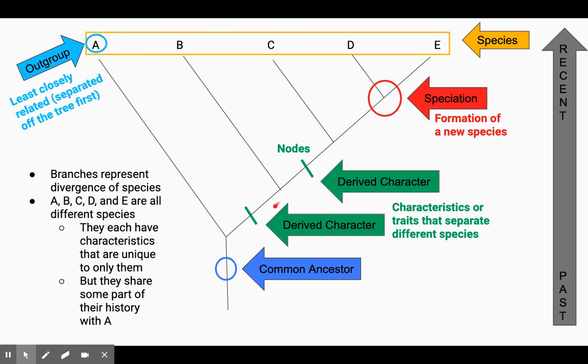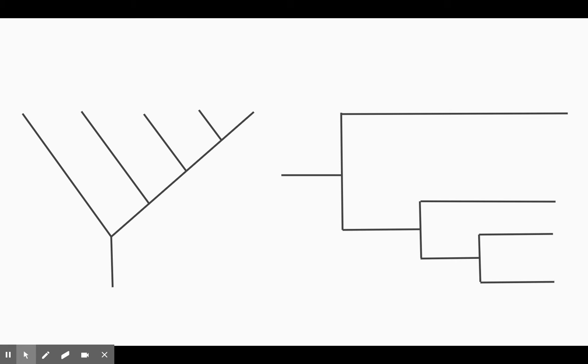So there can be multiple nodes on a phylogenetic tree. Sometimes you'll see nodes on the actual branch up here. It just really depends on what we're looking at. But let's go ahead and see. There's a couple of different ways that phylogenetic trees can look.